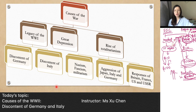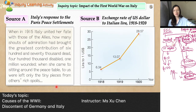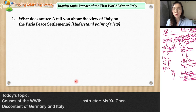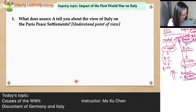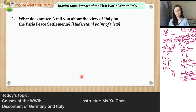For the discontent of Italy, I'd like you to complete an exercise yourselves, as it involves almost the same kind of economic problems — you can see this in the exchange rate of the US dollar to the Italian lira. You will answer two questions: first, what the source tells us about Italian views of the Paris Peace Settlement (why even a winning power had discontent), and second, identify the economic problems using clues from the sources. Complete this exercise and we'll meet again in the YouTube live. See you next time.